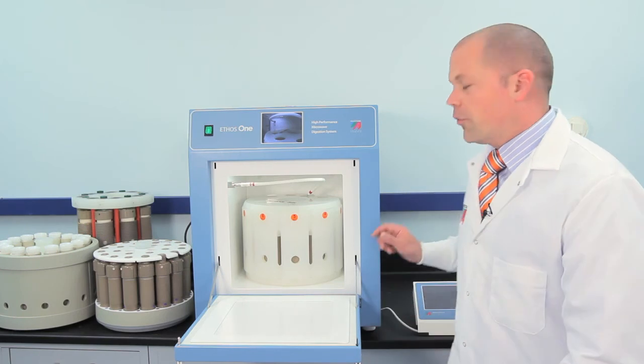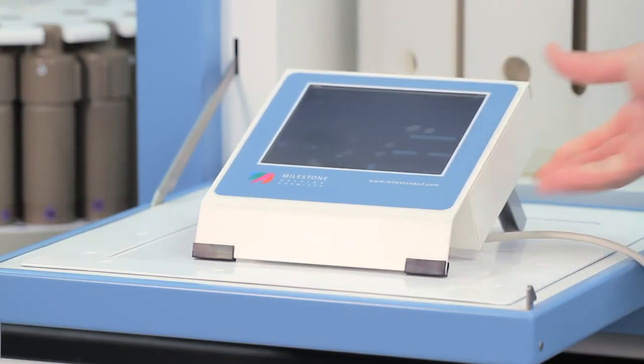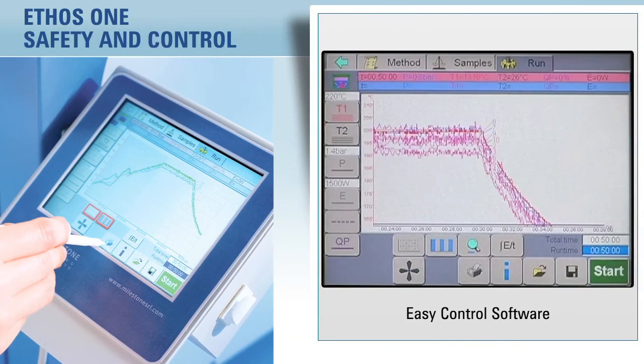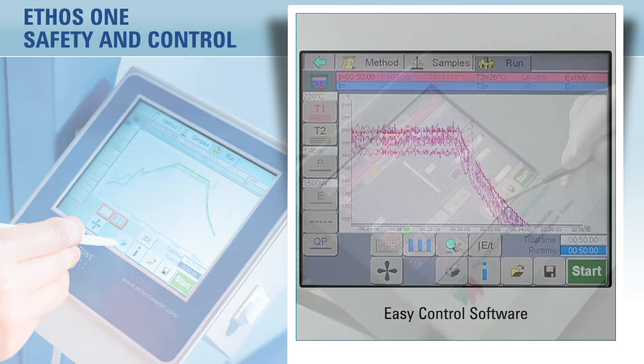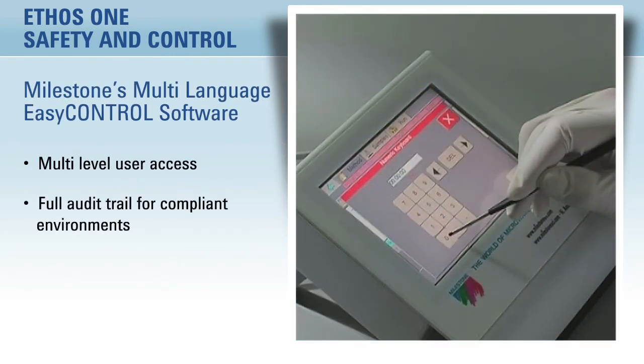Moving to the software, the Ethos One is controlled by this color touchscreen terminal, which runs Milestone's multi-language EasyControl software. The software features multi-level user access and full audit trail for compliant environments.